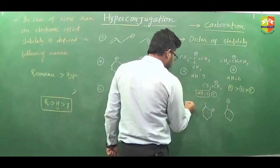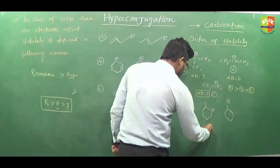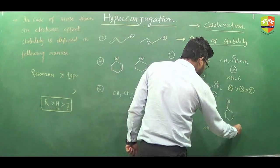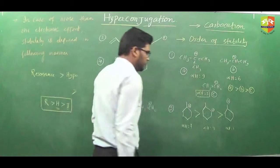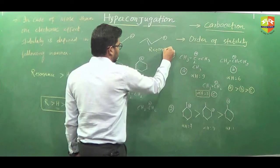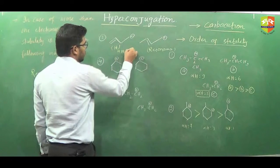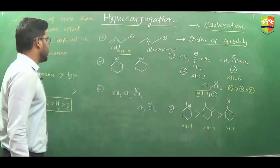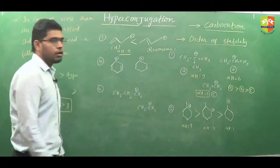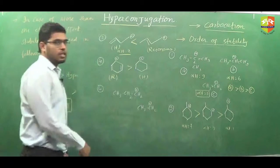Here, with three alpha carbons, the number of alpha hydrogens is 2 + 4 + 1 = 7; another has alpha hydrogens of 1 + 2 + 3 giving three; and another has only one alpha hydrogen. So more alpha hydrogens means more stability; the order follows accordingly. Here we have resonance possible — sigma, pi, vacant p — and here we have hyperconjugation with alpha hydrogens equal to two. Whenever we have two different electronic effects, resonance and hyperconjugation, resonance is more dominating, so stability of the resonance structure is greater.